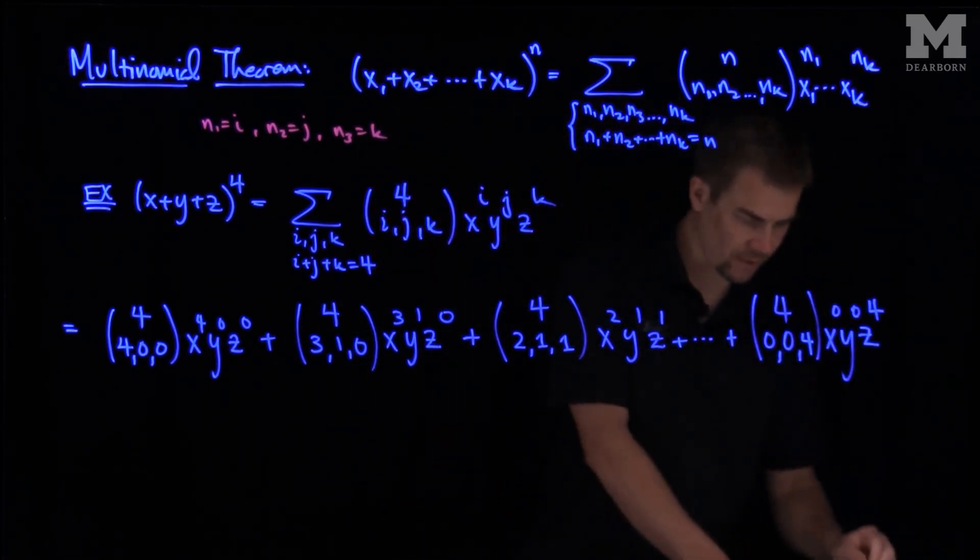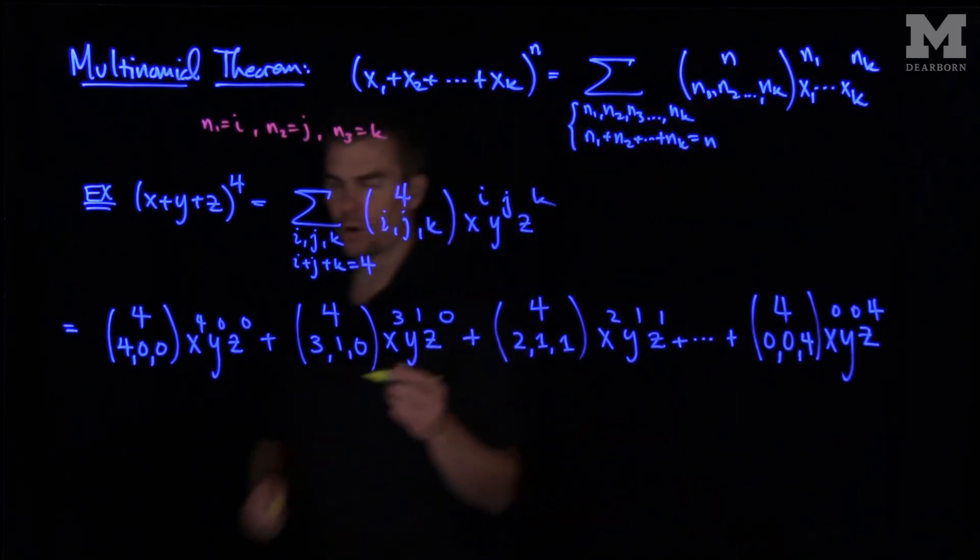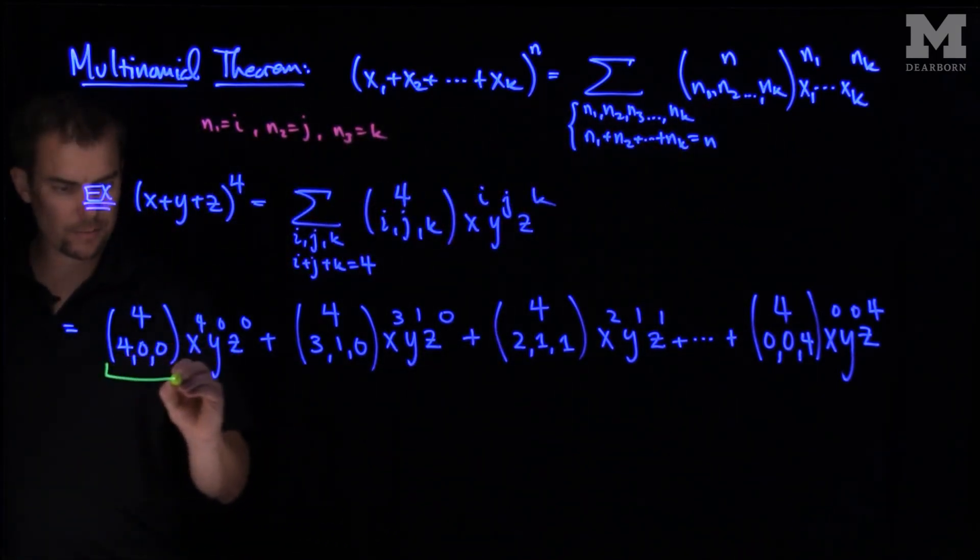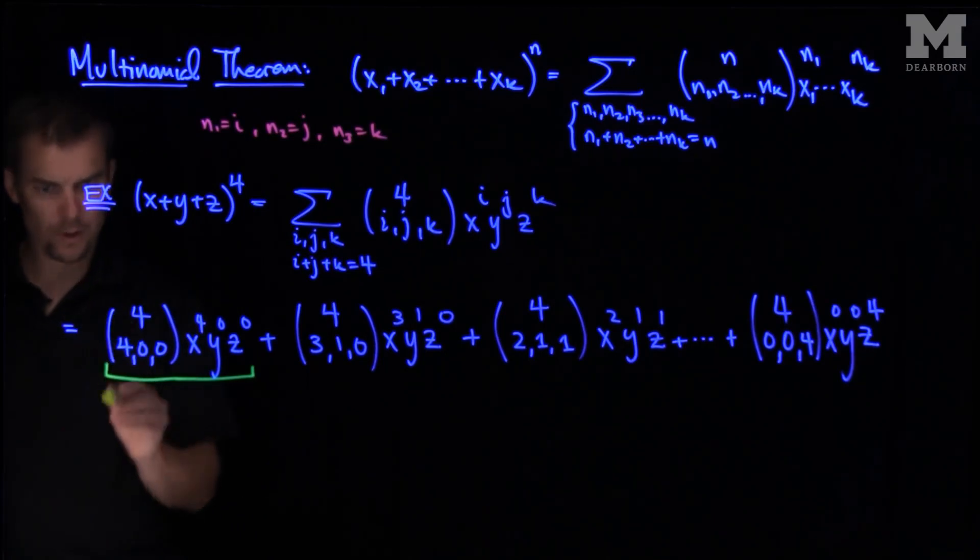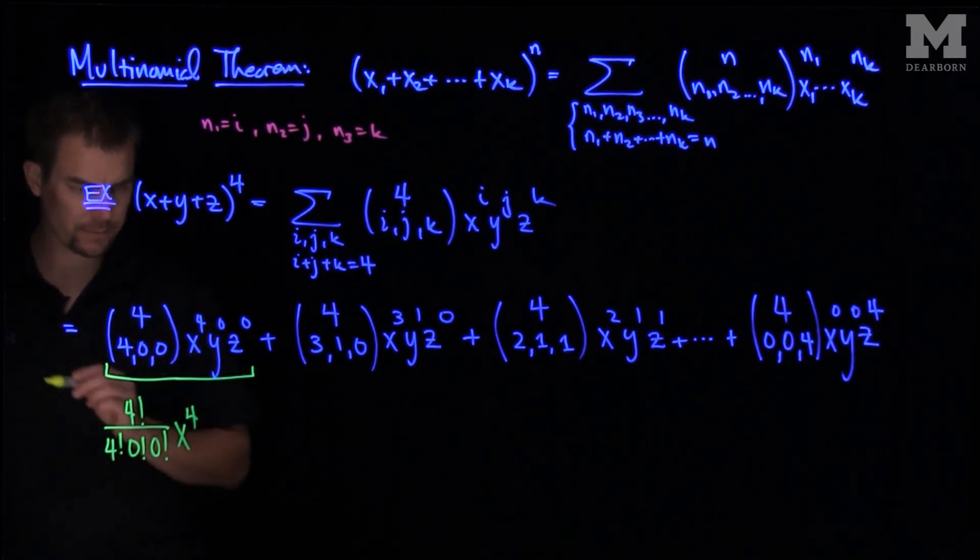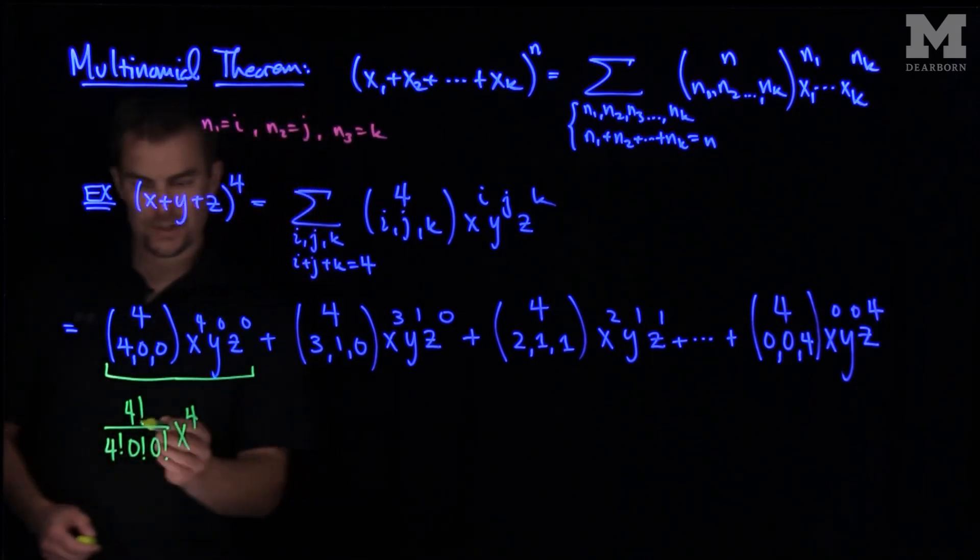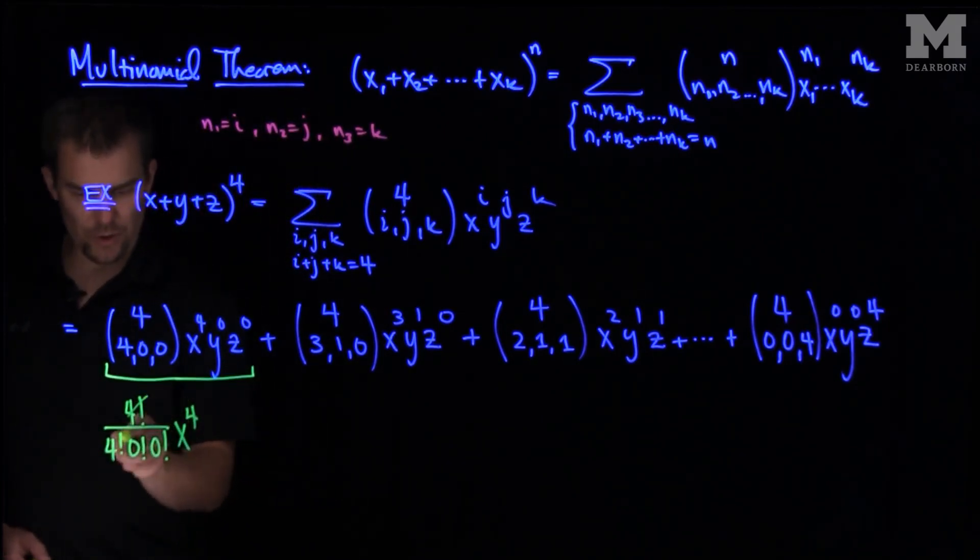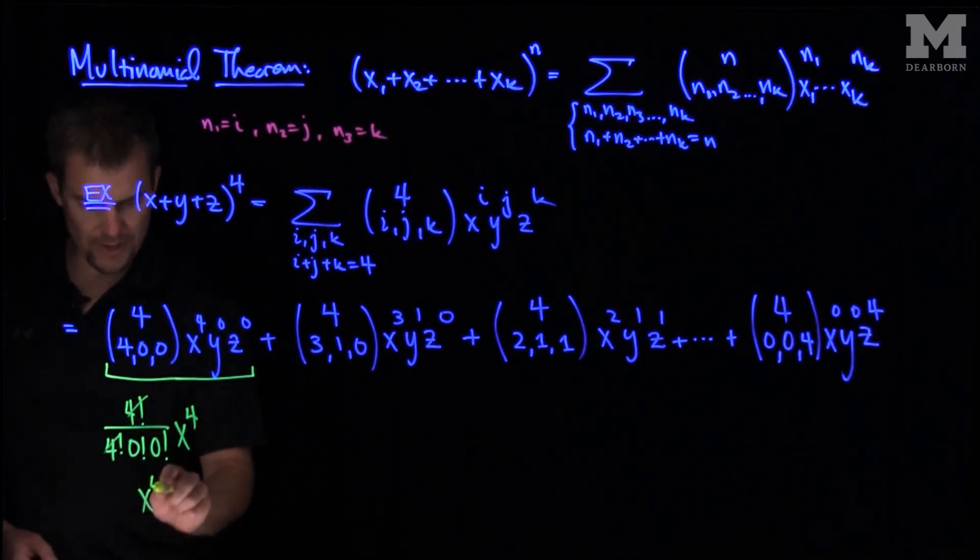And now, for example, let's figure out what some of these coefficients will be. So over here, this term, so this first term over here, would be equal to, well, this would be 4! over 4!0!0! x⁴. And we see that this will just be, zero factorial is one, those will cancel, so this whole term over here is just an x⁴.